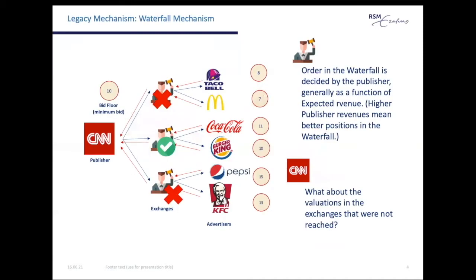Before 2017, most publishers used an allocation mechanism called the waterfall. Publishers ranked their partner ad exchanges by expected revenue and contacted them one by one when an impression was available. If the bids in the current ad exchange were higher than the minimum bid set by the publisher, the impression would clear. Otherwise, the publisher would contact the next exchange down the line and lower the minimum bid. The process continued until the impression cleared or remained unsold. A clear drawback was that advertisers with higher valuations might never be contacted due to their partner exchange's position in the waterfall.